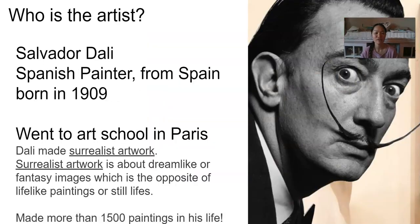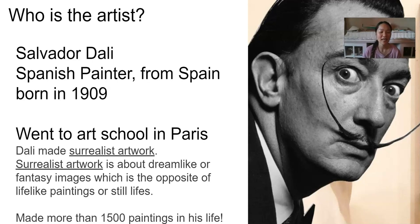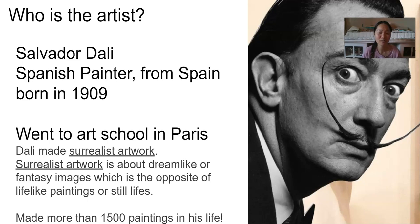So who is the artist? Salvador Dalí was a Spanish painter born in 1904 who went to school in Paris. As you can see in his picture, he was a very interesting guy — he always had a pointy mustache, and he was also an amazing painter.